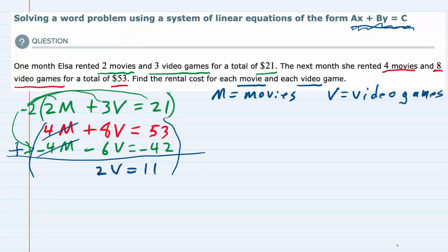And then we can divide both sides by 2 to get the V by itself, and we have V equals 11 divided by 2 is 5.5. Or, since we're talking about money, 5 dollars and 50 cents. So we have video games are 5 dollars and 50 cents, but we need the movies as well.